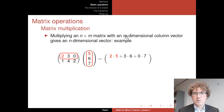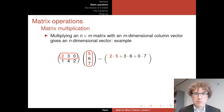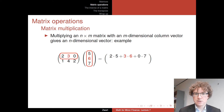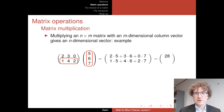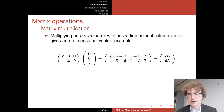So that is the operation of multiplying a matrix by a column vector. Looking at the slide again: for the first element, we multiply each element of the first row with each element of the column vector and add up the results — two times five, plus three times six, plus zero times seven gives 28. For the second row, one times five plus four times six plus two times seven adds up to 43.